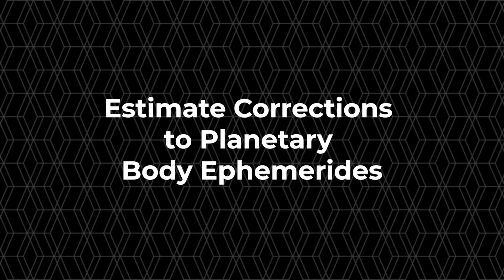The next capability is the ability to estimate corrections to central body ephemeris. This is a new capability in ODTK 7.4 targeted towards missions to small bodies such as asteroids, where the a priori ephemeris solution for that small body may not be as accurate as you would like. ODTK now allows you to estimate corrections to the a priori ephemeris for the small body, and this is a natural complement to the optical navigation measurement support that was added in ODTK 7.2.